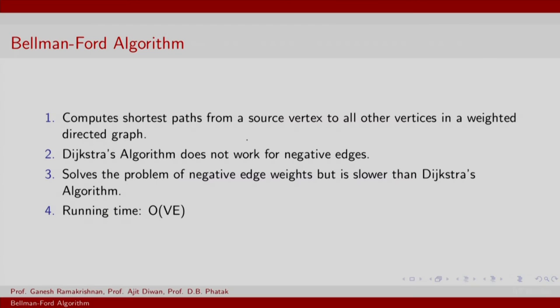Recall that we discussed Dijkstra's algorithm, which operates under the constraint that no edge weights are negative. The Bellman-Ford algorithm computes the shortest path from a single fixed source to all other vertices in a weighted directed graph. However, Dijkstra's algorithm does not work for negative weighted edges — it is a greedy algorithm that makes use of the optimal substructure property. Bellman-Ford solves the problem of negative weighted edges, but is slower than Dijkstra's algorithm. The running time is order of number of vertices times number of edges.